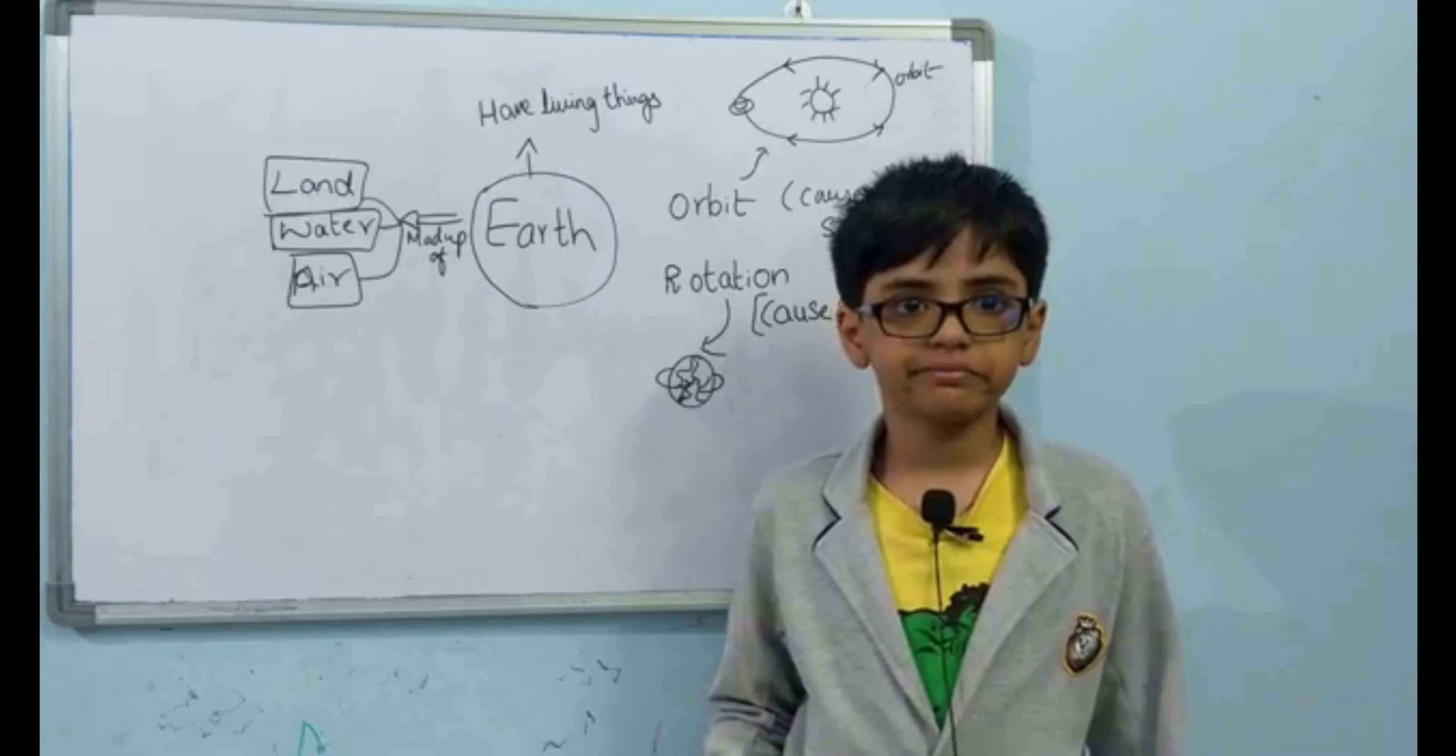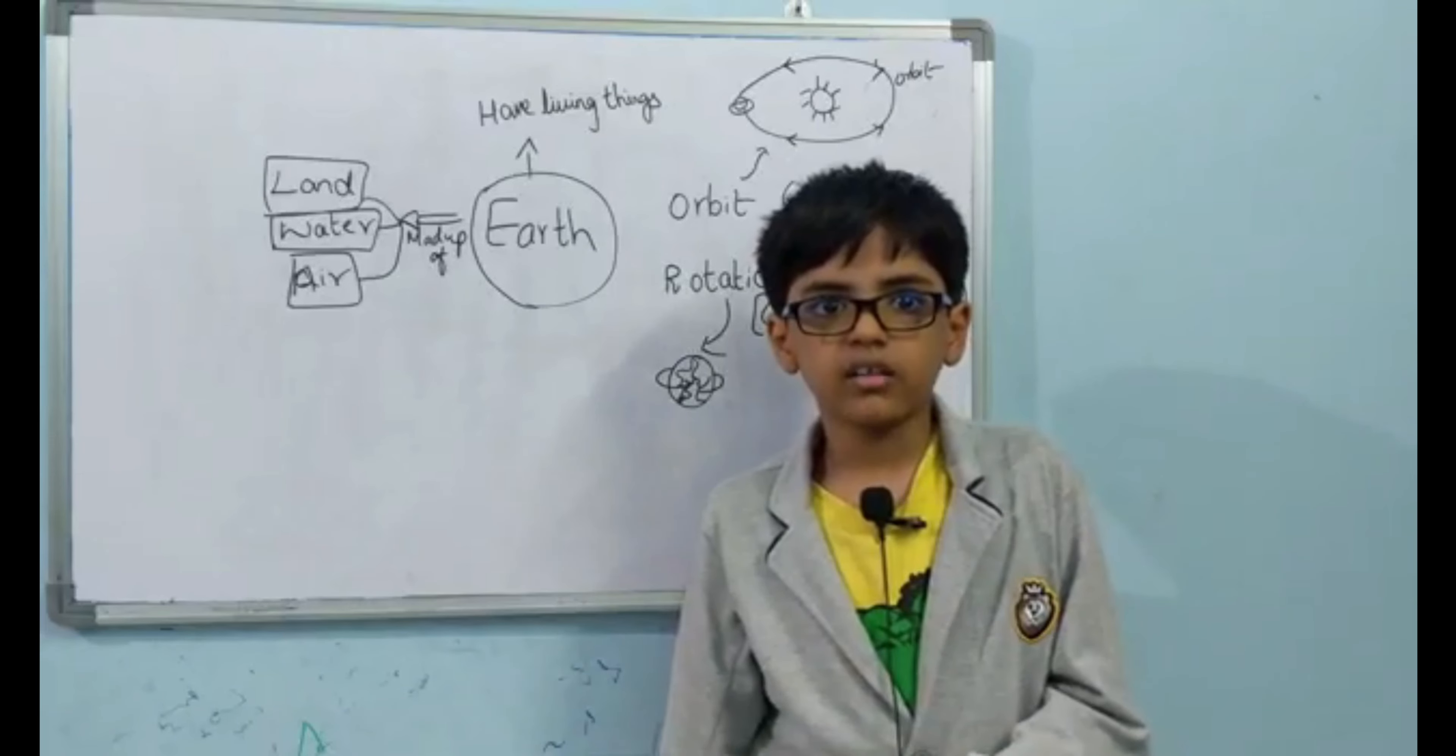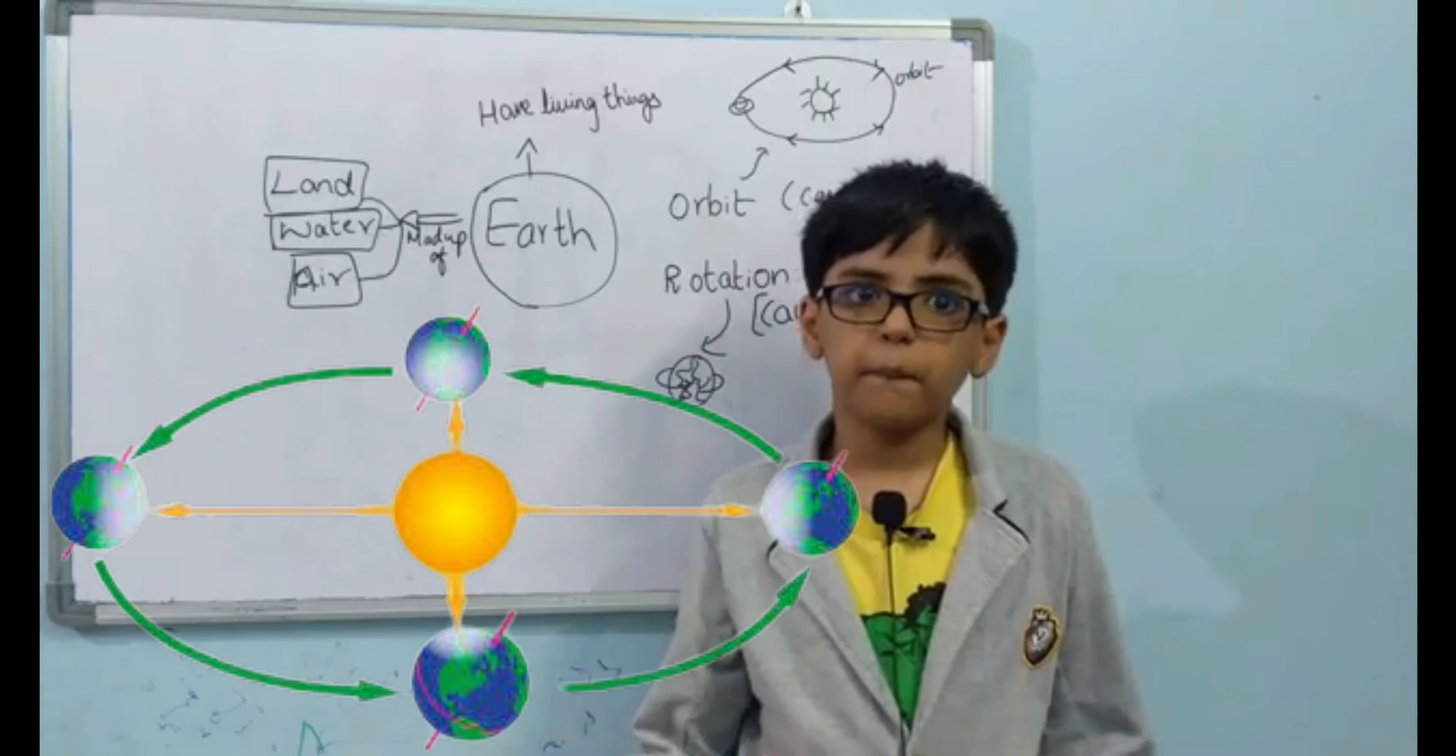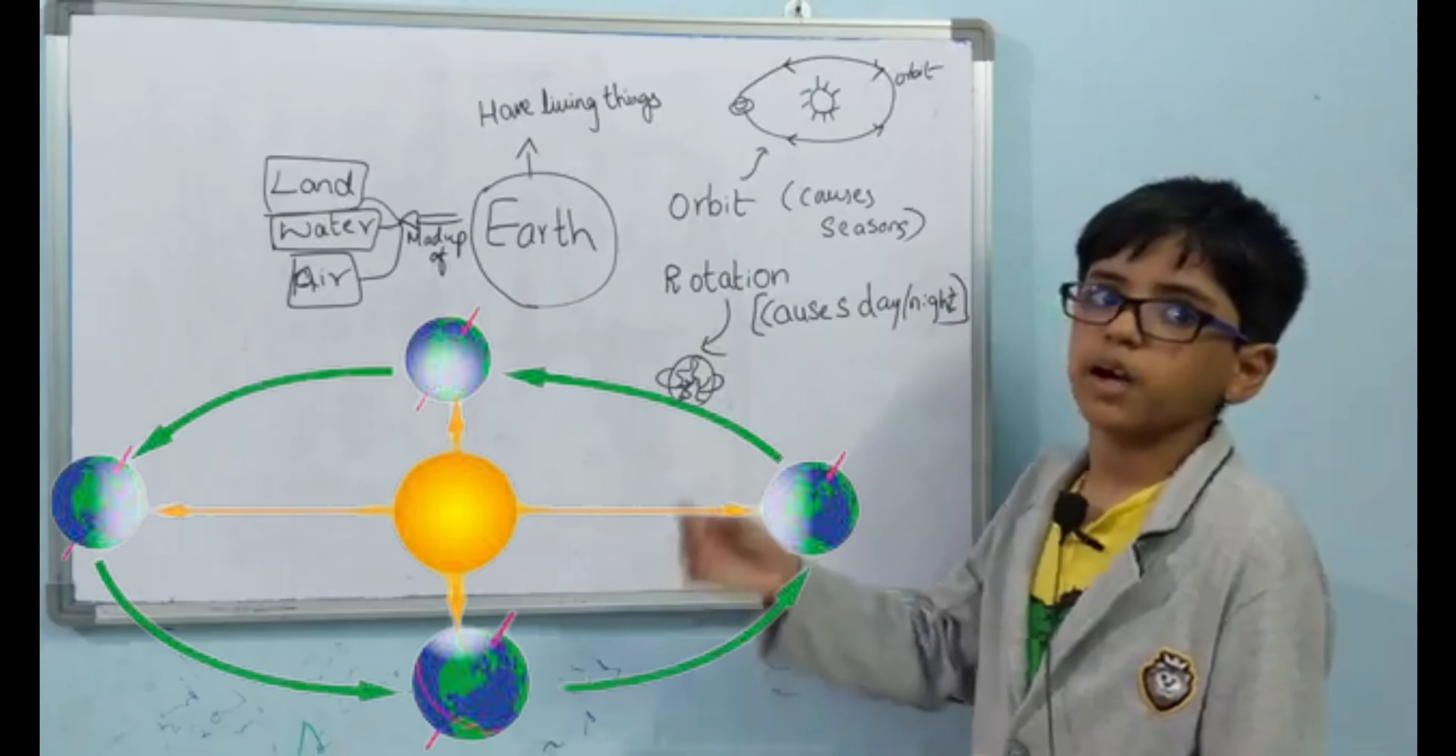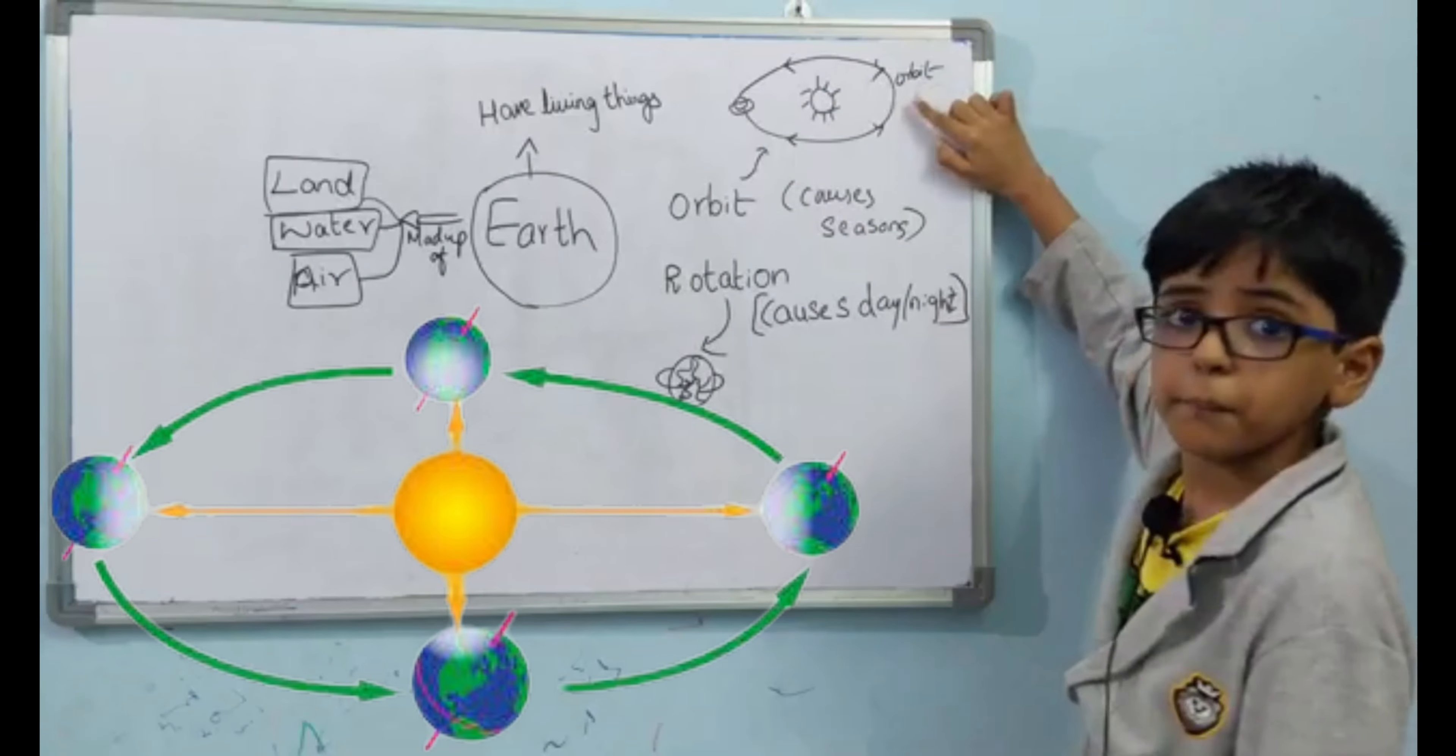When the Earth is moving around the sun, which is axis, it goes in a dignified path. The path is called Earth's orbit. In this mind map, here, Earth is moving around the sun, it is orbit.